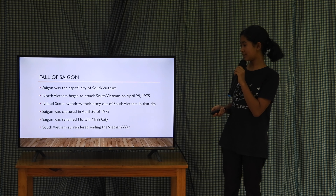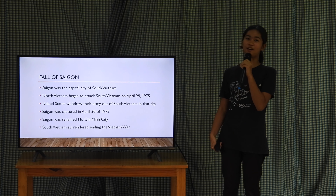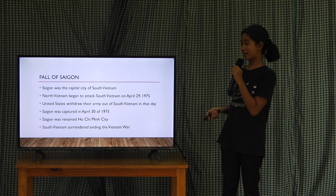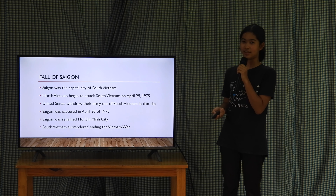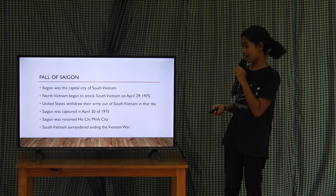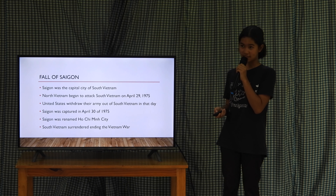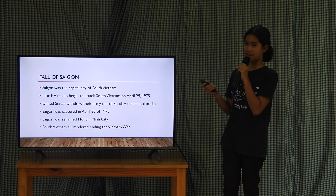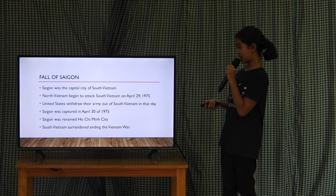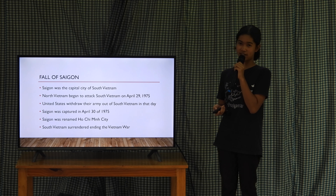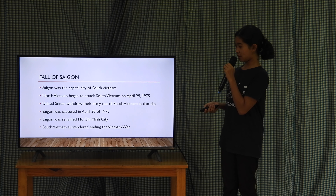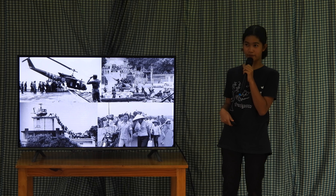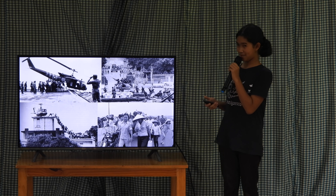Kim Il-sung is the founder of the Kim dynasty and he is also the grandfather of President Kim Jong-un. This is the timeline of the Korean War. It started on June 25, 1950, and two days after that, the U.S. entered the war. There were many battles in the Korean War, but now I will talk about the three major ones.